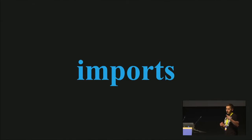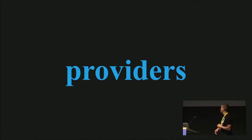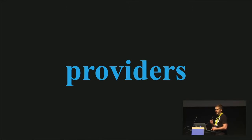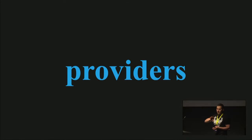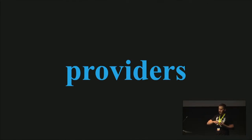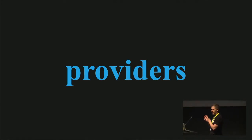When you want to use some function from a different file, what do you do? You import that function from that file. This is what imports are for in ng-module. And a bit of a different situation with providers. Declarations, imports, and exports have local visibility — your declarations are visible only inside this module. But if you have providers inside it and you use this ng-module somewhere else, those providers will be visible too. So declarations are local scope to the module until exported, and providers are globally scoped.